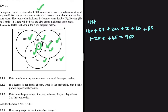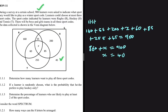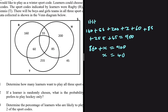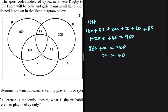Adding all of that gives us 860 + x = 900, so x = 40. Therefore, 40 learners want to play all three sports codes — they want to participate in all three. We replace x with 40.